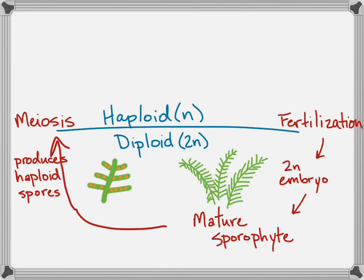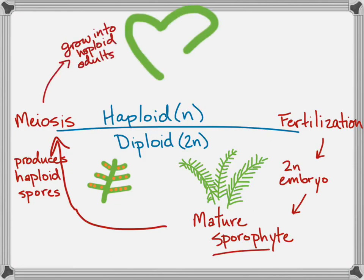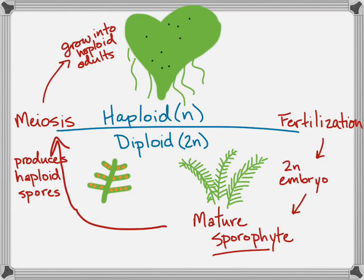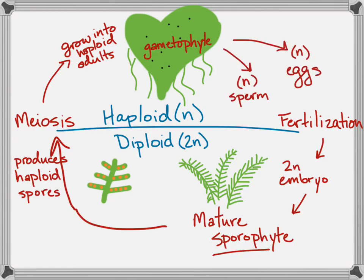After meiosis, those haploid spores grow into tiny — and this is not at all to scale — tiny haploid adults in a fern. Within this little plant-like haploid adult, which is a mature adult called a gametophyte, there will be different regions that produce sperm and eggs. The sperm-containing regions release the sperm, and they travel — it's a very tiny little organism — over to the eggs, perhaps in droplets of water.